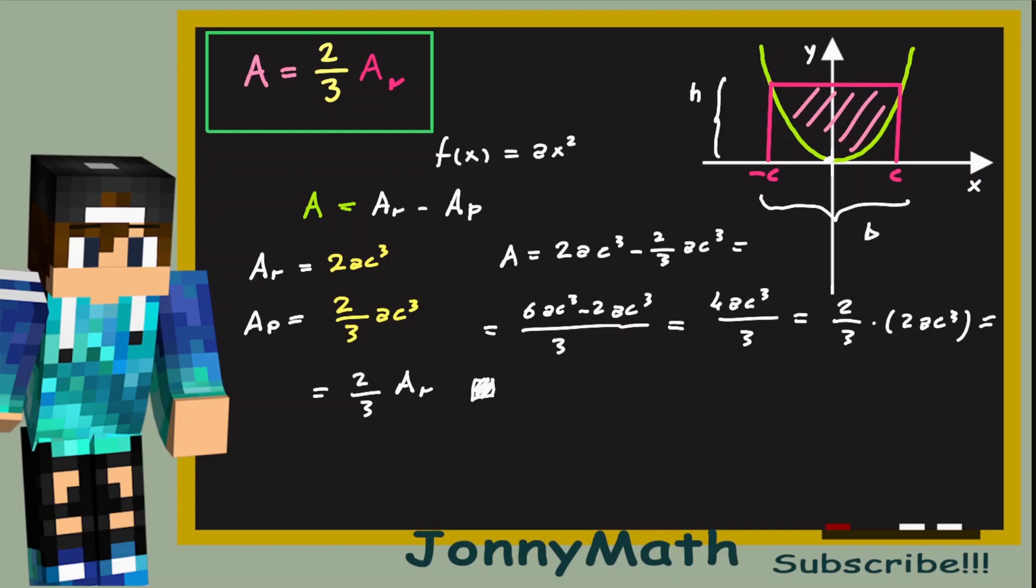We have finally proven that the area of this parabola segment is 2 thirds times the area of the rectangle. And this is an astonishing result for me because it is very simple. It's always 2 thirds times the area of the rectangle, no matter what the parabola is.